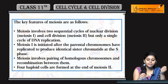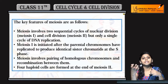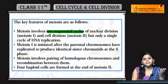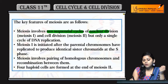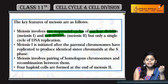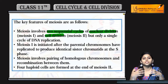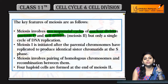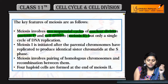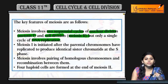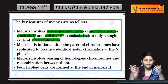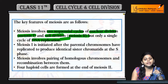कुछ key features देखते हैं meiosis के — meiosis में क्या key events होते हैं? Meiosis involves two sequential cycles of nuclear division and proper cell division जिसमें cytokinesis भी होगी. Meiosis में two phases होते हैं — meiosis one and meiosis two. लेकिन DNA replication सिर्फ एक बार होती है, जबकि nuclear division दो बार होती है.